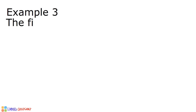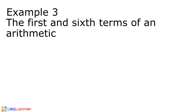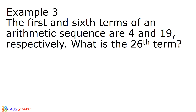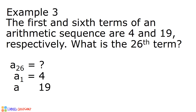Example number 3. The first and sixth terms of an arithmetic sequence are 4 and 19 respectively. What is the 26th term? A sub 26 is our missing term. 4 is our first term, 19 is our sixth term, and n is equal to 26. If you will notice, there is no common difference given — the common difference is unknown. So our first step in solving this problem is to solve for the common difference first.